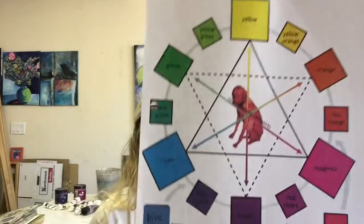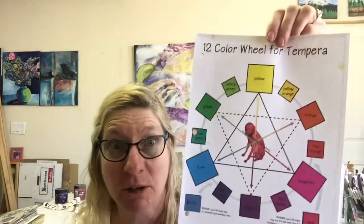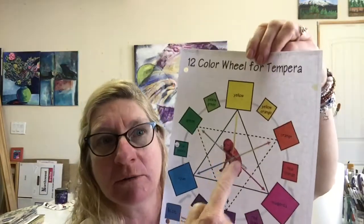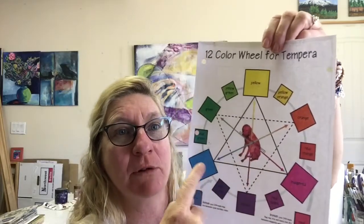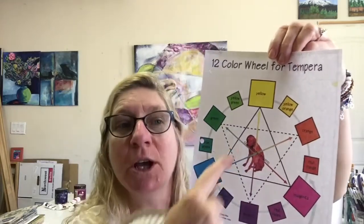So with these three primary colors, we can make every color you see on this color wheel. Even brown. That's why the dog is in the middle. Because if you mix all three primary colors, as many of you know, you'll make brown. But I don't want you to do that first.